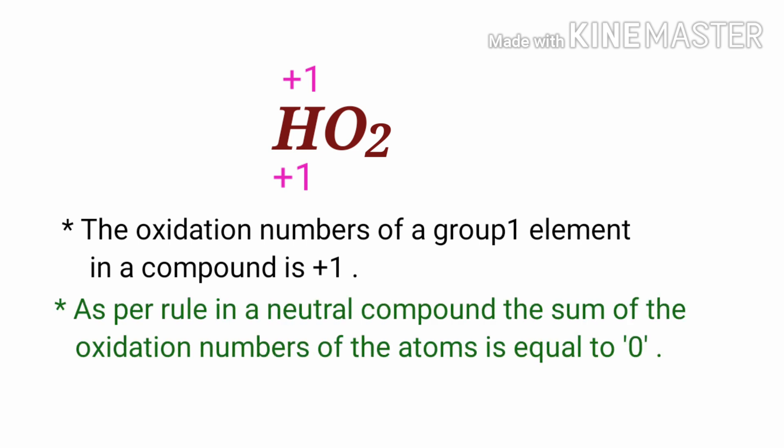As per rule, in a neutral compound, the sum of the oxidation numbers of the atoms is equal to zero. So the numbers along the bottom must add up to zero. Therefore, the number under O2 must be minus one.